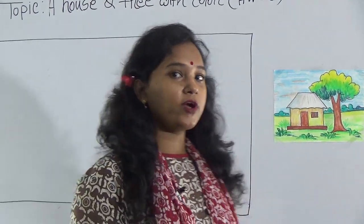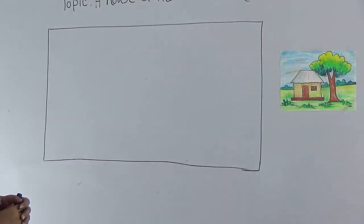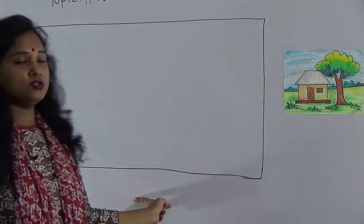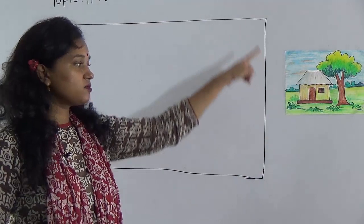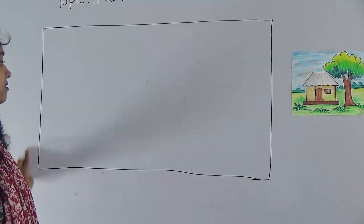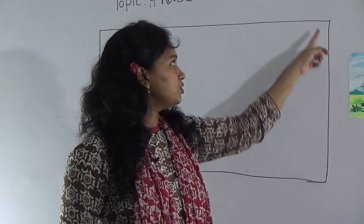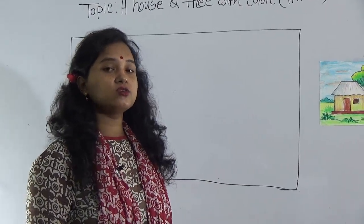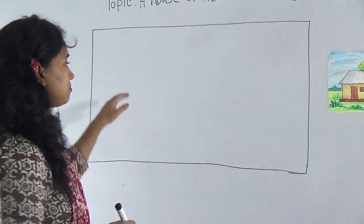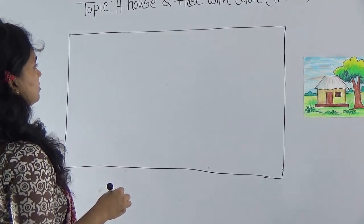So dear student, look at the board and draw with me. You all know how to draw a house. First, look at the board — this is like your copy. You won't make this box on your copy. Remember this — you should use your full page of the copy. Don't margin. Look at the board and see how I will draw the house entry.